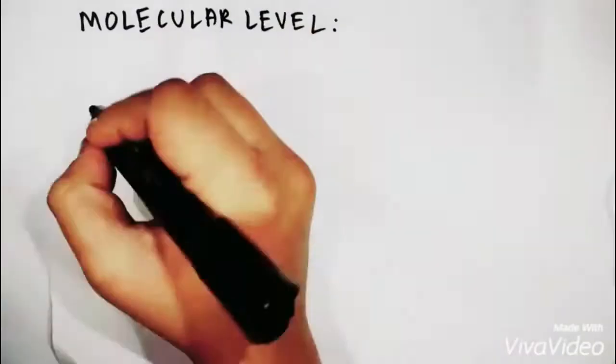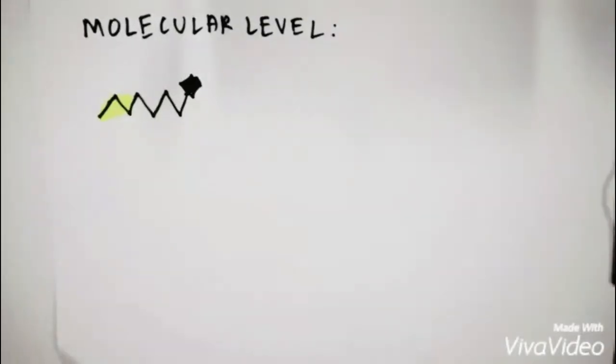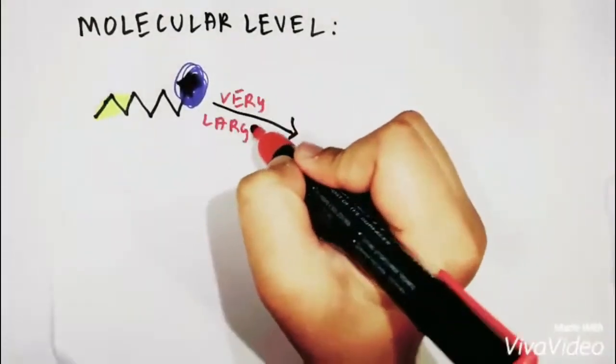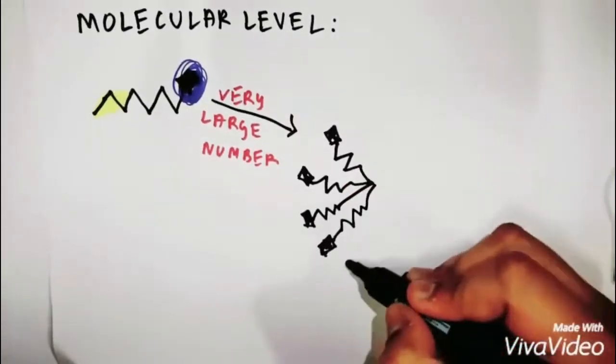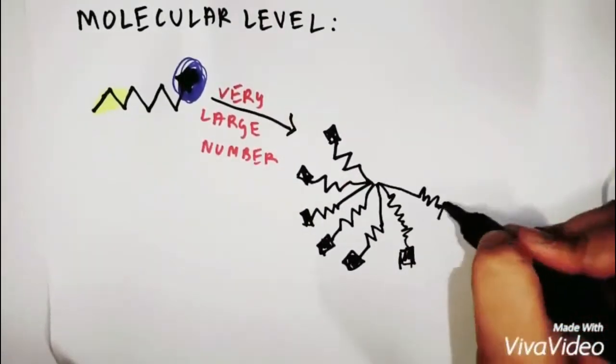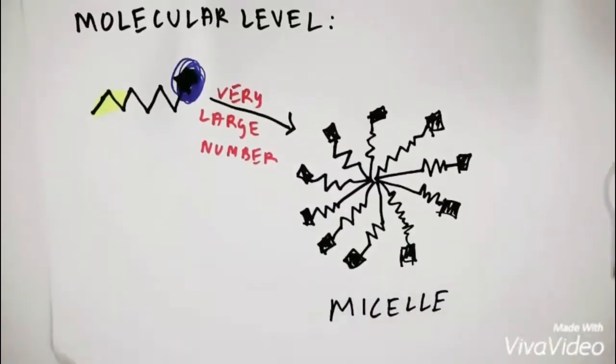Now let's see what happens at the molecular level. The long chain attracts the oils while the short head attracts the water particle. Consequently, a very large number of such molecules come together to form a globular structure known as a micelle.